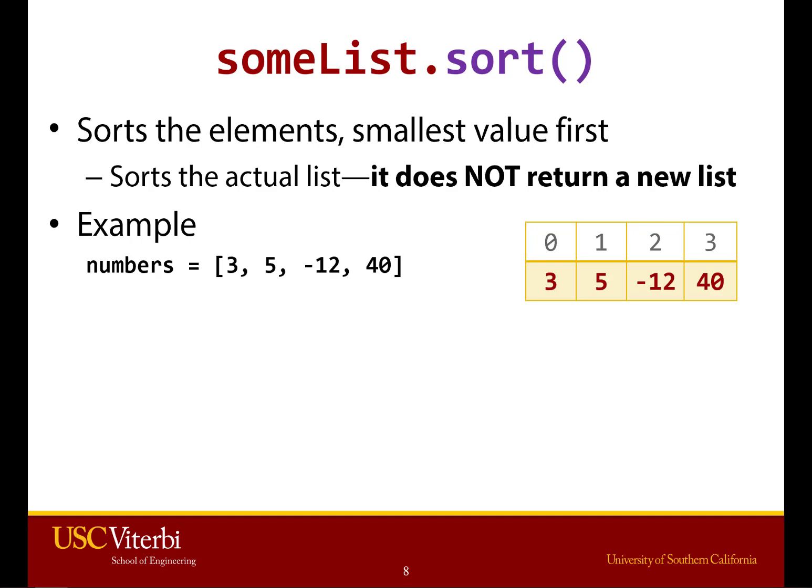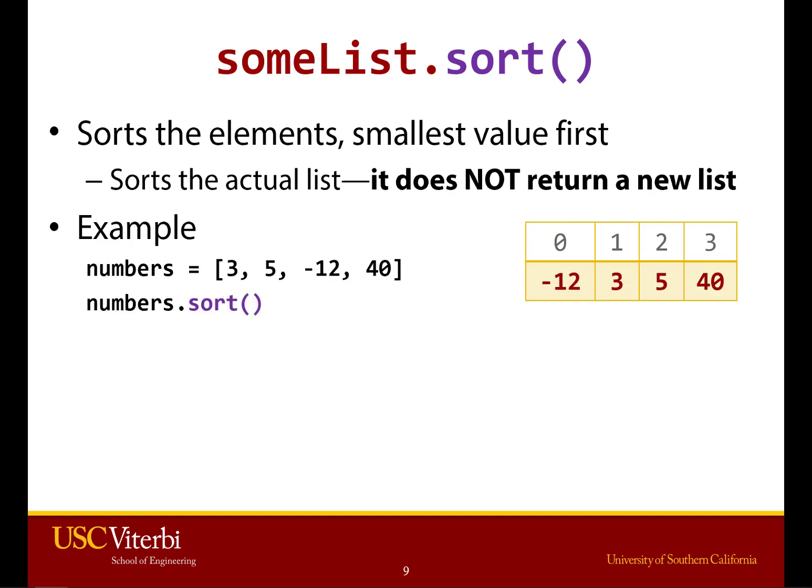One really popular one is list.sort. It does exactly what you might think — it organizes all of the elements in a particular order. So for example, if we have a list of numbers: 3, 5, negative 12, 40, and I sort them, by default it rearranges the numbers in increasing order. So now we have negative 12, 3, 5, 40.